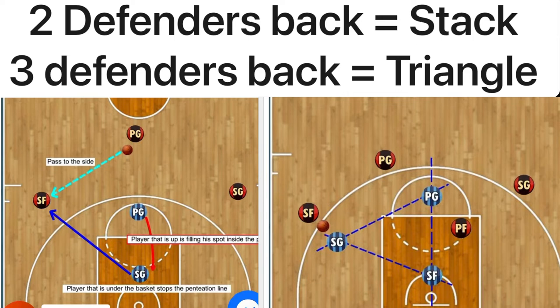When just two players are involved in transition defense, they need to position themselves in a lane. The first player contains the ball handler leading the break. When the pass goes to one side, the player under the basket needs to close the penetration lane, and the player in front comes down to fill the spot inside the paint. The goals are: prevent a layup, force mid-range shots, and force the offense to make more than two passes — because if you can get the offense to pass a couple times, the other three teammates can recover.